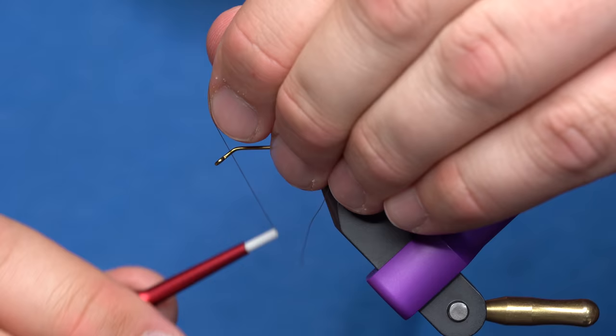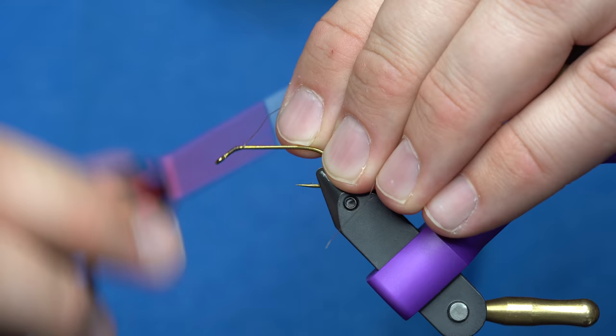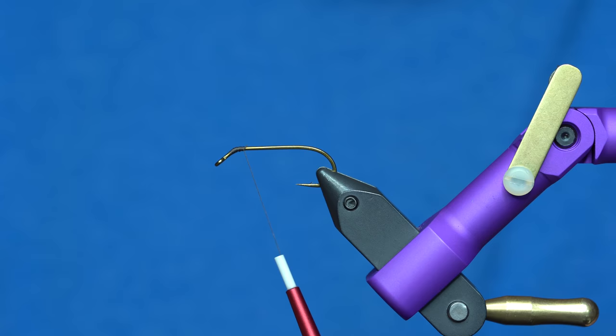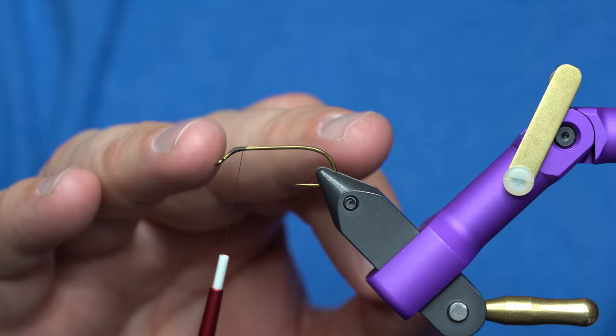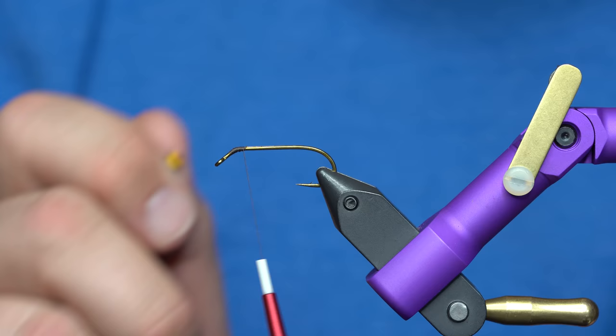So what I'm going to do is, in order to attach those barbell eyes, I'm going to build up some thread right here on this bend. And I'll take the eyes. And another thing when you're selecting eyes, select the eyes based on how fast you want this fly to sink. You could do a size 6 with small, medium, or large eyes. You could use even a size 8 or 10 as well with the same eyes. So the eyes don't necessarily have to match the overall hook. It's just based on how quickly you want this to sink.